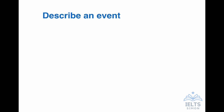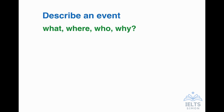First, you need to know what will be on the task card. If you're asked to describe an event, you'll be asked to describe what, where, who, and why about this event — what the event was or what type of event it was, where it was, who went or who was performing or who was in the event. And of course, at the end, a question about why. Why did you like it? Why did you enjoy the event? Why do people enjoy this event or go to this kind of event?